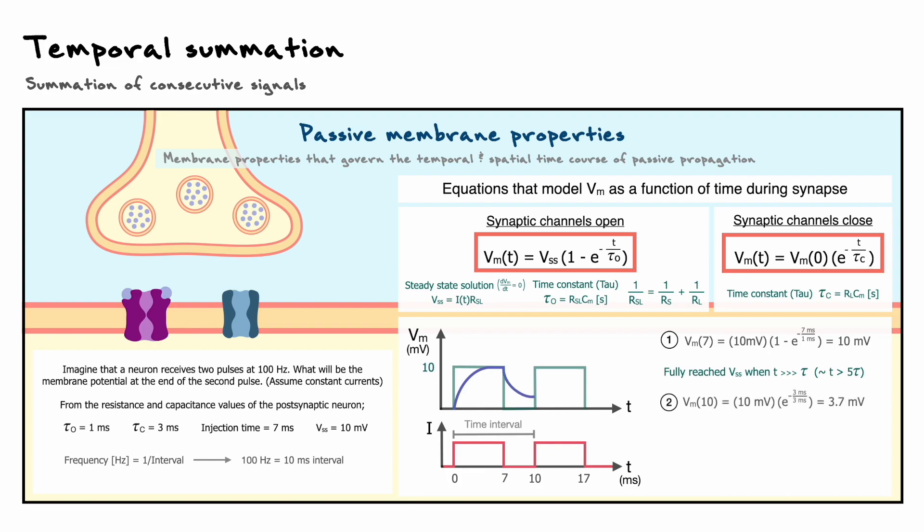By plugging the numbers, we get that the signal decays to 3.7 mV. In cases like this, where t equals tau, there is another trick that can help you save some time.